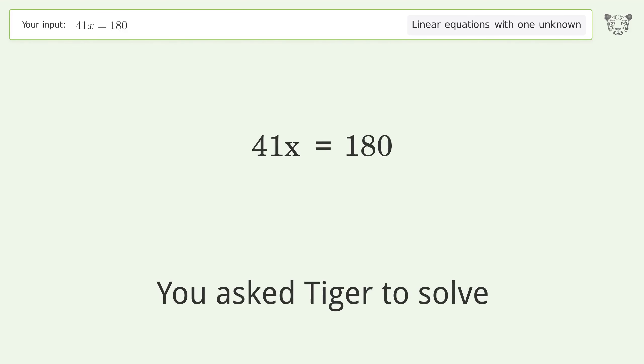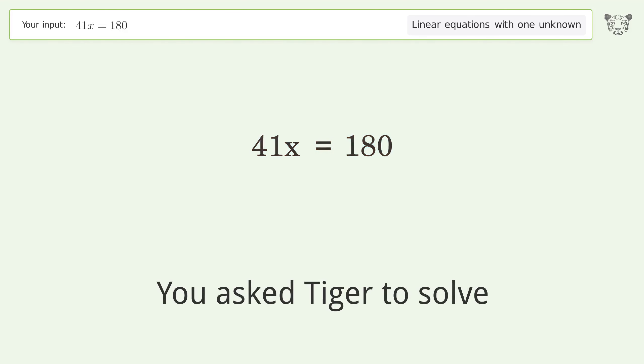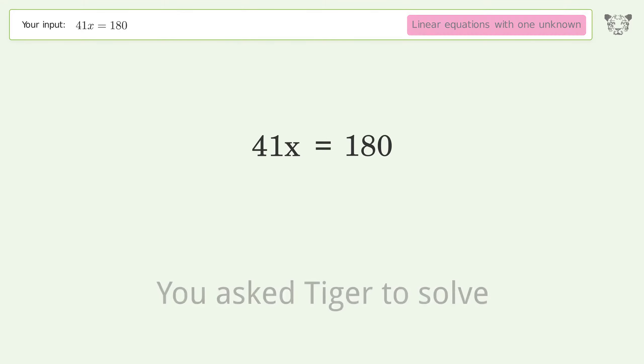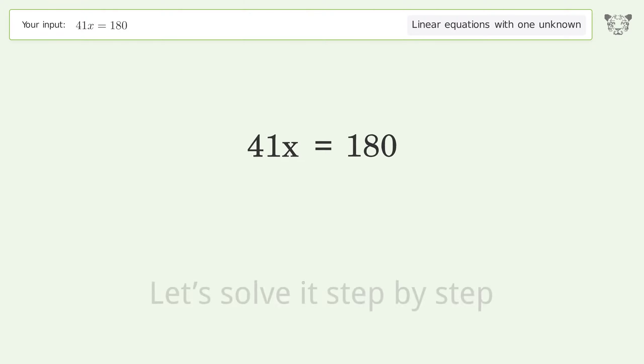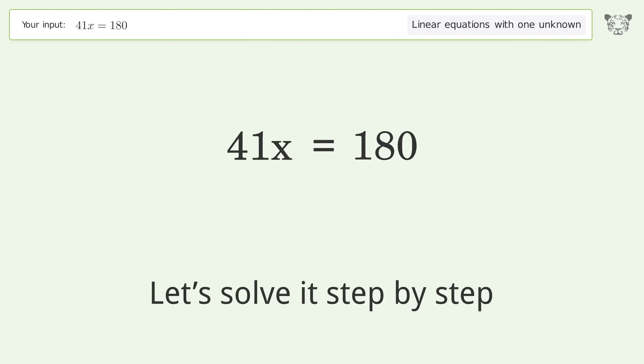Tiger is asked to solve a linear equation with one unknown. The final result is x equals 180 over 41. Let's solve it step by step.